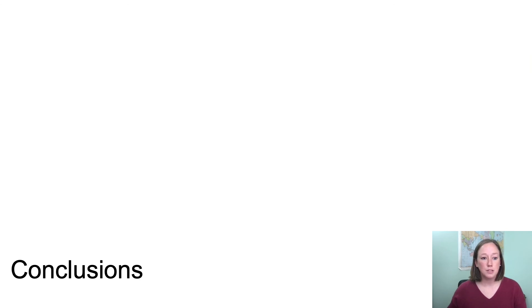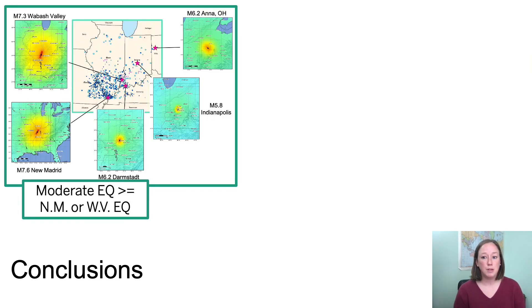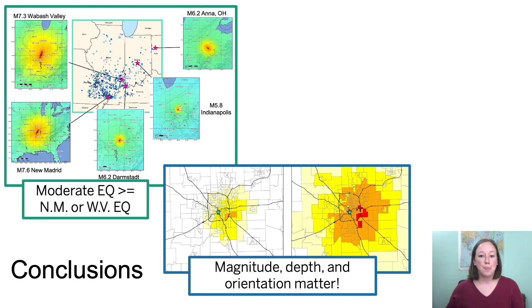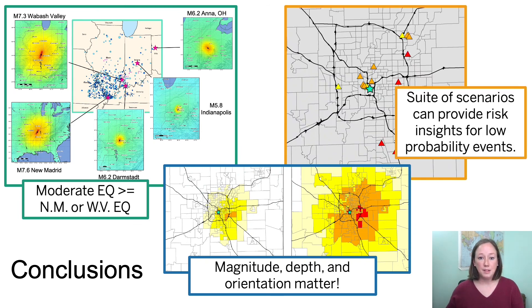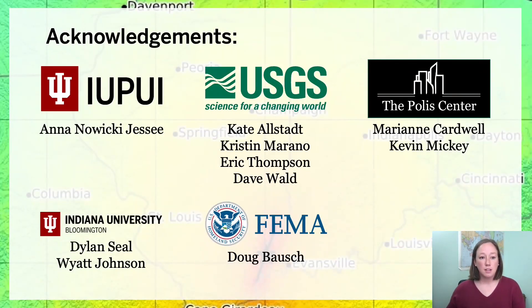In conclusion, moderate earthquakes near major Midwest cities can have losses greater than or equal to those from a New Madrid or Wabash Valley earthquake, and must be considered when assessing seismic hazard in states like Indiana. Magnitude and depth have first-order influence on losses, but orientation differences can increase losses by about 13 to 32% for the scenarios we ran. A suite of scenarios can potentially provide risk insights for low probability intraplate events. I'd like to acknowledge everyone who assisted with ShakeMap, Hazus, and the USGS ground failure tool. Thank you.